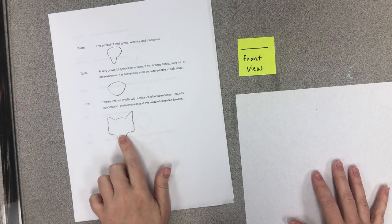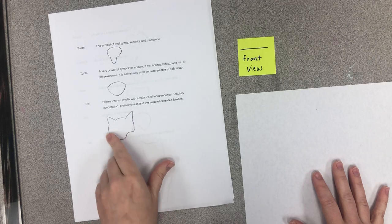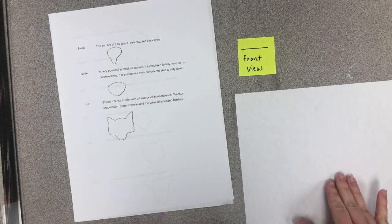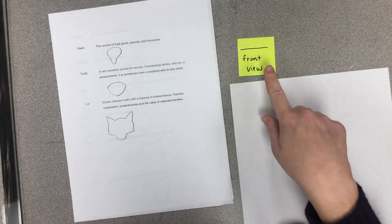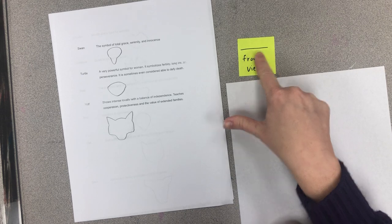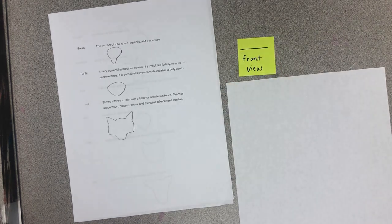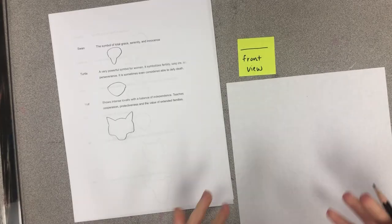Now, on the paper, there's kind of the shape of the head already drawn for you so that you can have a good starting point. You can also search whatever animal you're looking, front view. So if I searched wolf front view, I have a whole bunch of pictures of a wolf looking straight forward that I can use for reference.